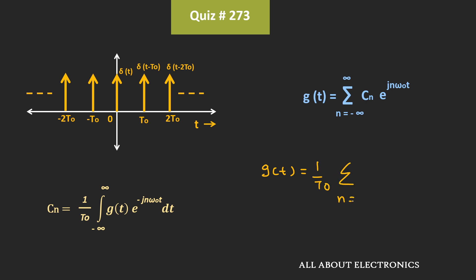summation of n equals minus infinity to plus infinity, e to the power j times n times 2π divided by t0 times t, where this omega 0 is equal to 2π divided by t0.